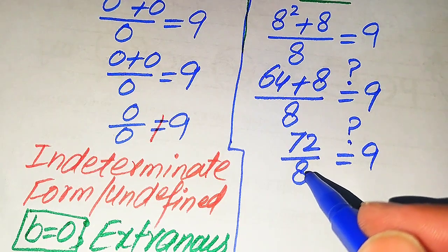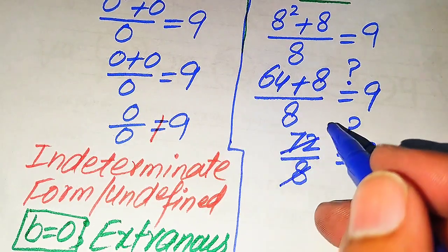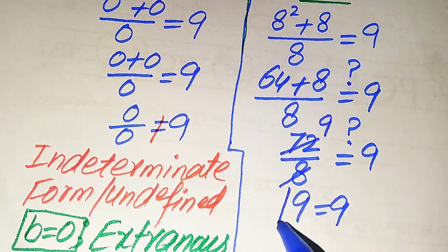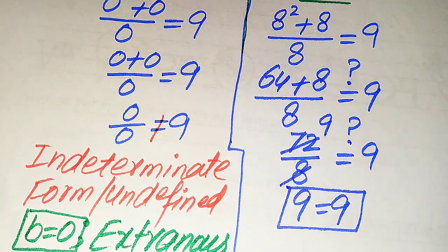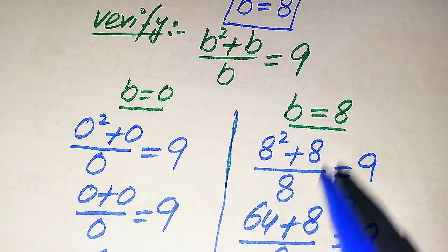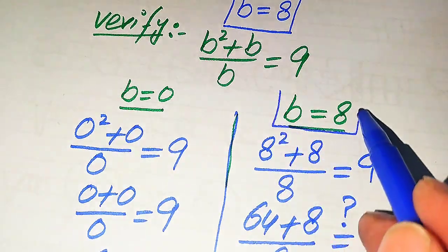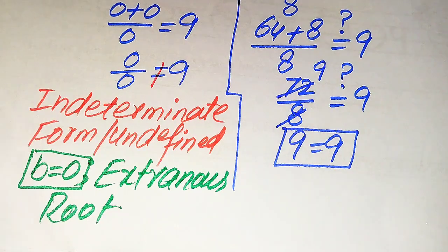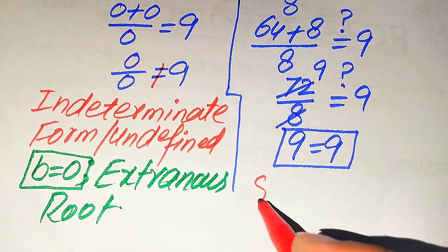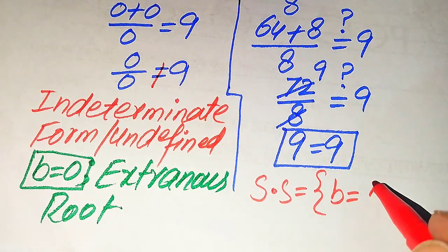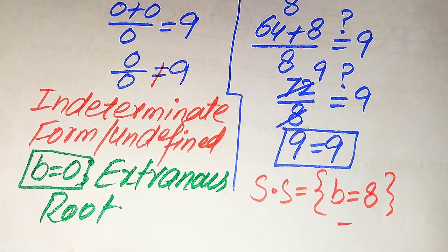From the table of 8, we know that 8 nines are 72, so 72 divided by 8 gives 9. We see that 9 equals 9, which shows that both sides are equal. This means the value b equals 8 satisfies the given equation. We finally conclude that the solution set of this question has only one solution: b equals 8.